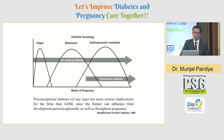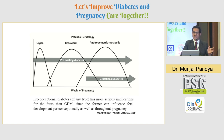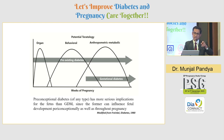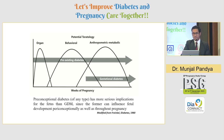If there is pre-existing diabetes with non-achievement of euglycemia, organogenesis, behavioral changes, and anthropometric changes will occur in the fetus. If euglycemia is achieved, we are not worried. If there is gestational diabetes mellitus, organogenesis is assured to be normal. That is where the importance of measuring fasting glucose at the first antenatal visit lies.